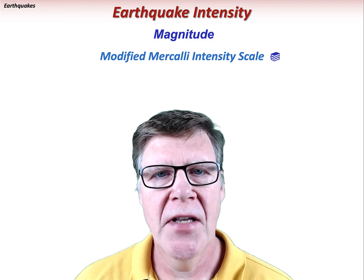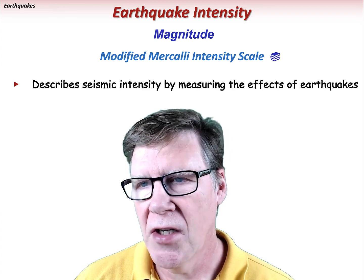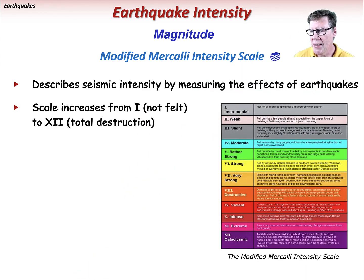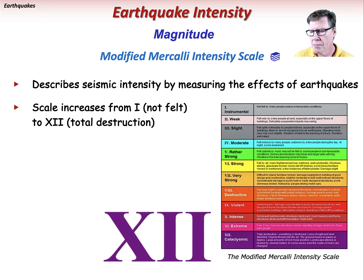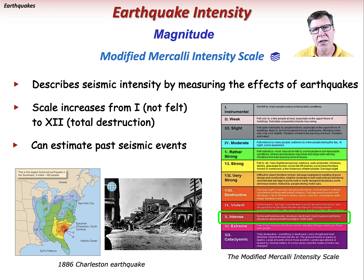The Modified Mercalli Intensity Scale qualitatively describes earthquake intensity by measuring the effects caused by earthquakes. It is a scale of progressively increasing physical and destructive effects, from 1 (not felt) to 12 (total destruction). Despite limitations, the scale can use historical accounts to estimate the size of past seismic events when no scientific measurement was available. An example is the 1886 Charleston, South Carolina earthquake, which was a level 10 on the Modified Mercalli Intensity Scale — interpreted as equivalent to a magnitude 7 on the seismic moment scale.